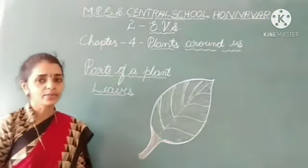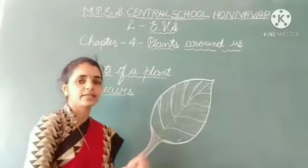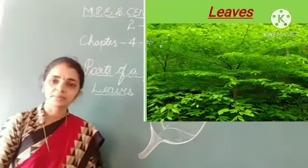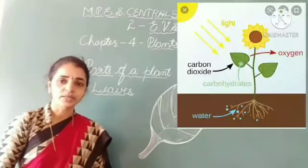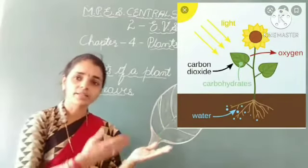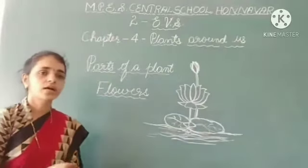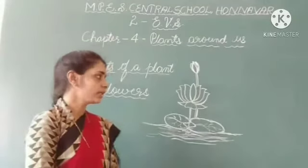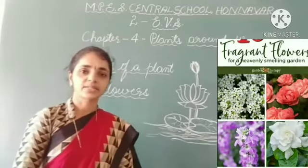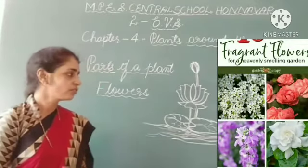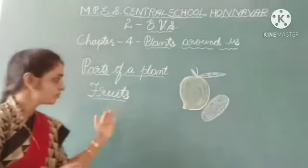Leaves. Leaves are mostly green in colour. They make food for the plant using water and sunlight. Flowers. Flowers are colourful and give out a sweet scent. They produce fruits and seeds.